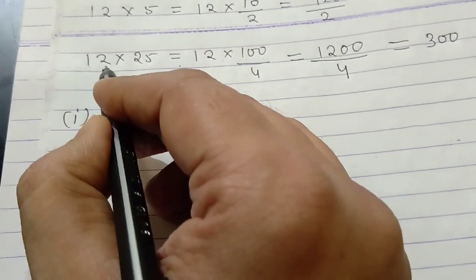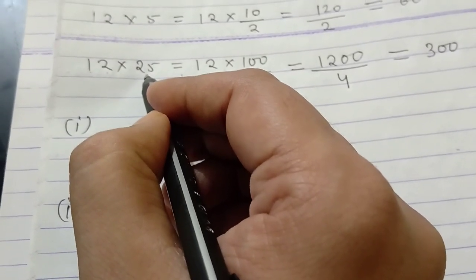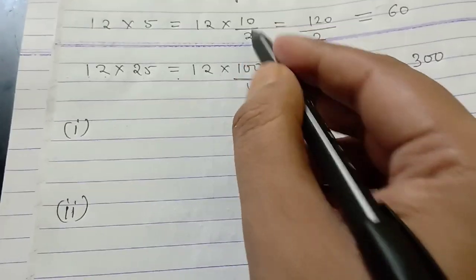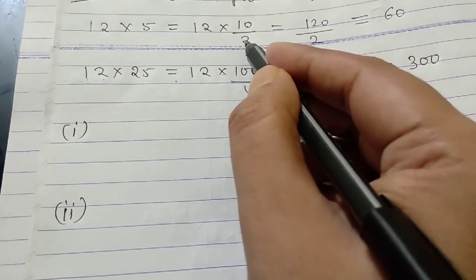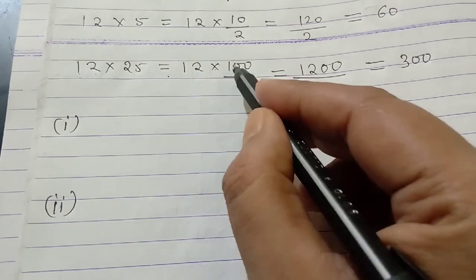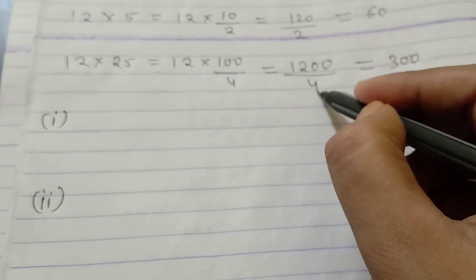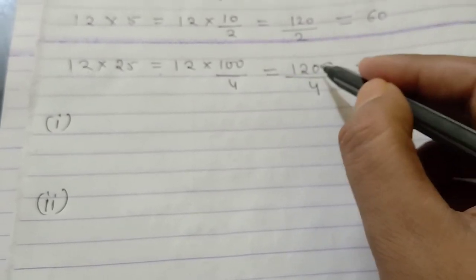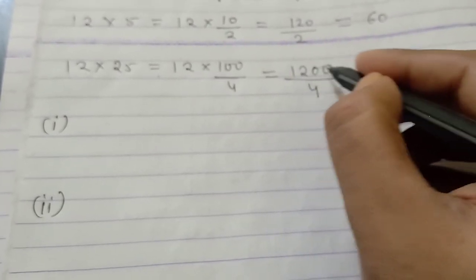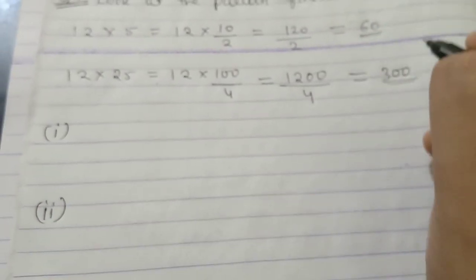Second pattern has been given like this way. 12 is a common number again. And now, this number has become 25 means 5 times has been increased. So, 12 multiplied by 100 and this 2 doubled to 4. 12 multiplied by 100 gives 1200 and divided by 4. If we divide the number, the answer is 300 and the first answer is 60.